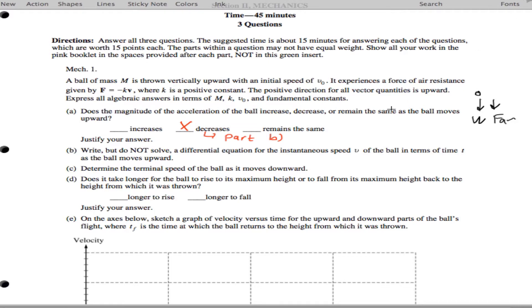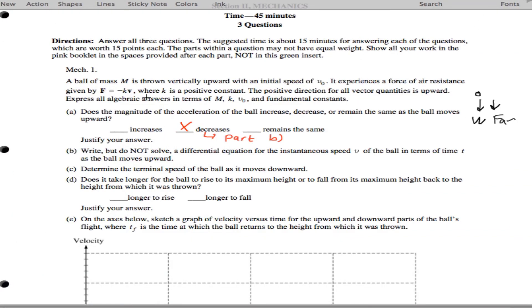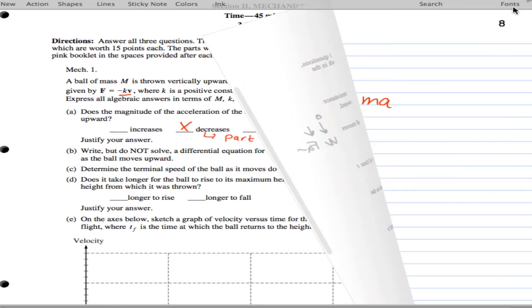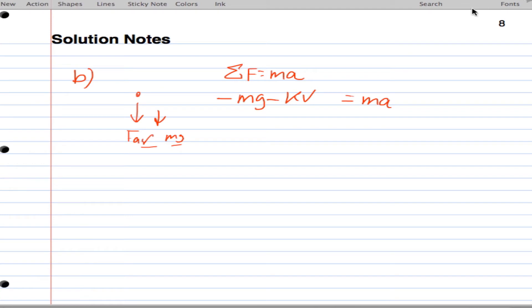So, let's take a look at part B. It says, write, but do not solve a differential equation for the speed of the ball in terms of time t as it moves upwards. Let's remember when they say write a differential equation, we have the air resistance going down and we have the weight going down, and that means we have two forces acting. We know that the sum of the forces equals the mass times the acceleration, so we're going to have negative Mg minus Kv equals Ma. The reason I have the negative sign in front of Mg is that it has the same sign as the air resistance, and they tell us in the problem that air resistance is negative Kv.